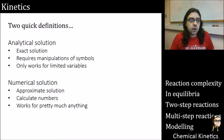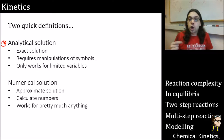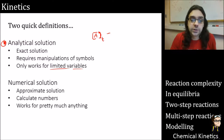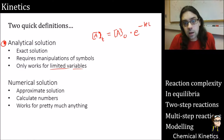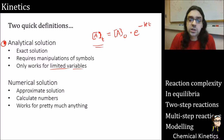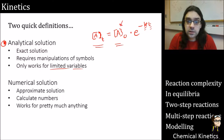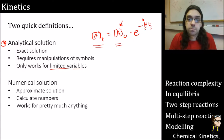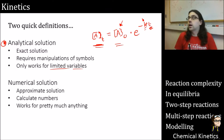There are two quick definitions to cover first. One is the concept of an analytical solution — something that is exact. We start by manipulating our maths and symbols together, and then we have a simple equation that predicts something. It only works for a limited number of variables. A good example is a first-order integrated rate law. This predicts the concentration of A at time t, based only on the starting concentration, the rate constant, and time. The only variable is time — we just plug time in.